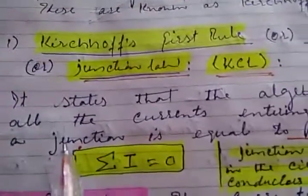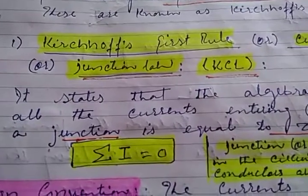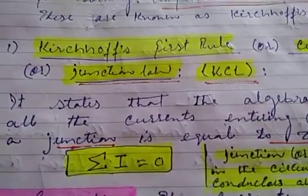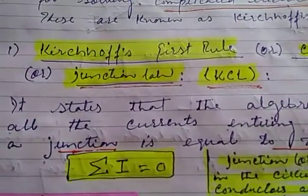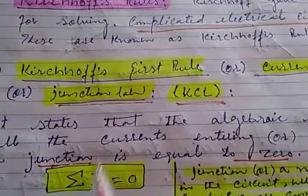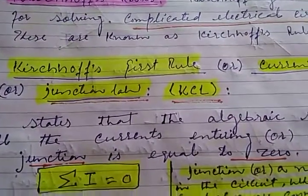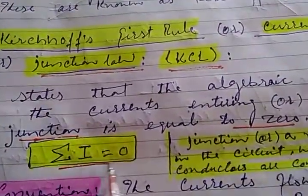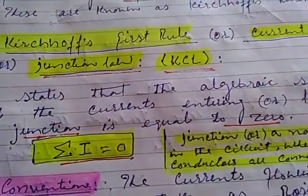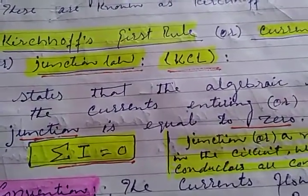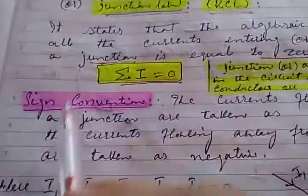A junction or node is a point in a circuit where two or more conductors are joined electrically. According to Kirchhoff's first rule, the algebraic sum of the currents meeting at a point is equal to zero — that is, the sum of currents entering a point equals the sum of currents leaving the point.